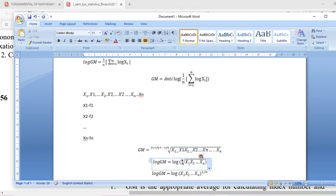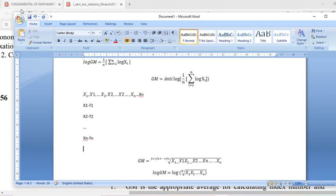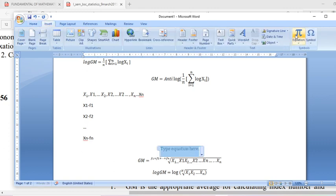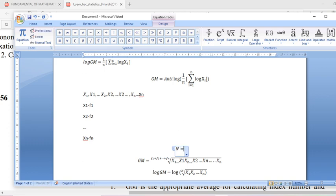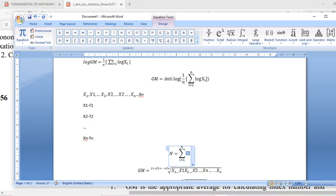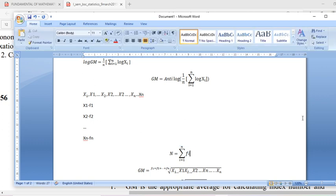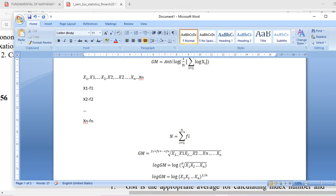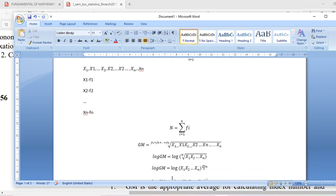In that case we can write it as capital N, so capital N is equal to summation i going from 1 to n of fi. So instead of summation f1 or f1 plus f2 plus fn, we can replace it with capital N.